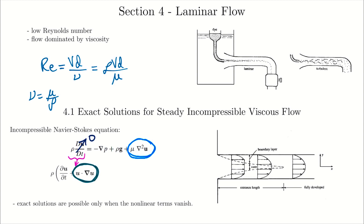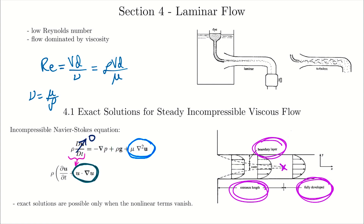One more thing before we start working through solutions: this picture shows that as flow enters a channel or tube there's an entrance region. The flow enters fairly uniform, but throughout the entrance length it becomes fully developed, reaching a flow profile that stays exactly the same and doesn't change anymore as it flows along. That's because the boundary layers — the influence of shear due to the walls — are growing in the entrance length until they cross, and beyond that point the flow stays the same. In cases of fully developed laminar flow we can further simplify our Navier-Stokes equation, making exact solutions possible.